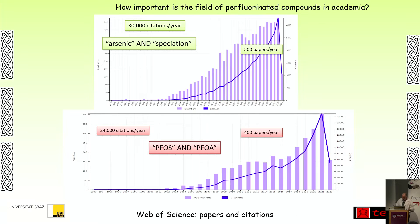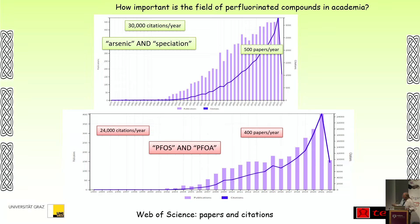When you look at how important they are academically — I have made my career on arsenic, so I have to compare this to arsenic speciation. These are papers and citations over the years: a rapid increase, 500 papers per year when you search in Web of Science. And if you put only PFOA or PFOS in there, you already have 400 papers per year, and it increases rapidly.